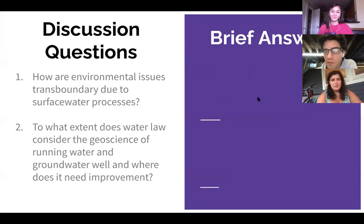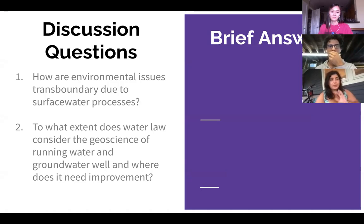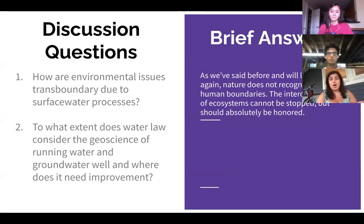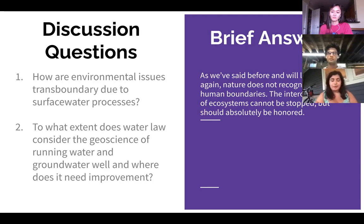All right, let's move to our questions. I kind of distilled them. How are environmental issues transboundary due to surface water processes? We kind of already touched on this throughout our summaries. My answer is very simple — we've talked about this every week: nature doesn't recognize human boundaries, and the interconnectivity of these ecosystems cannot be stopped but needs to be honored. The issue of whether they're transboundary is really a moot point — they've proven time and time again to be so. Riverine connectivity is crucial, stream processes are crucial, and they need to be understood and respected.